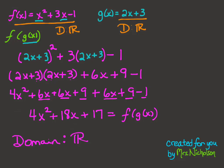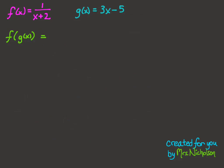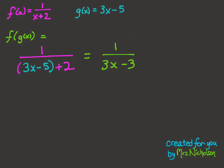Pause the video and take a moment to try the next example on your own. For your composite function, you should have gotten 2x squared plus 6x plus 1, and again the domain is all real numbers. Now let's look at another example like this. I have the function f of x equal to 1 over x plus 2, and g of x equal to 3x minus 5. So g of x is going to be the function that's input into f of x, and our composite function is going to be 1 over — where the x is — we put 3x minus 5, plus 2. So this is equal to 1 over 3x minus 3. That's our composite function: f of g of x is equal to 1 over 3x minus 3.